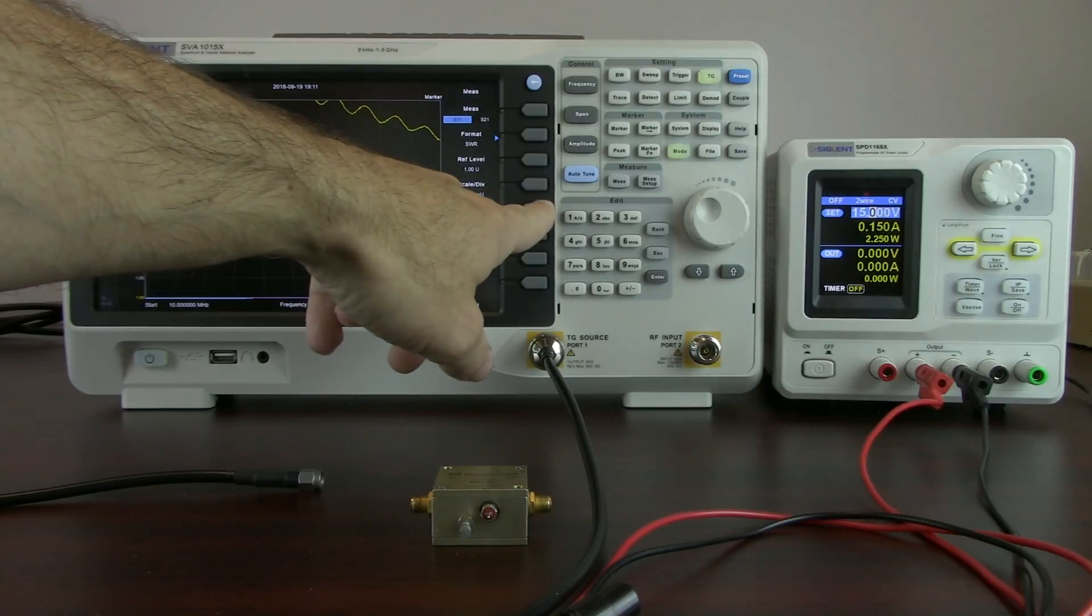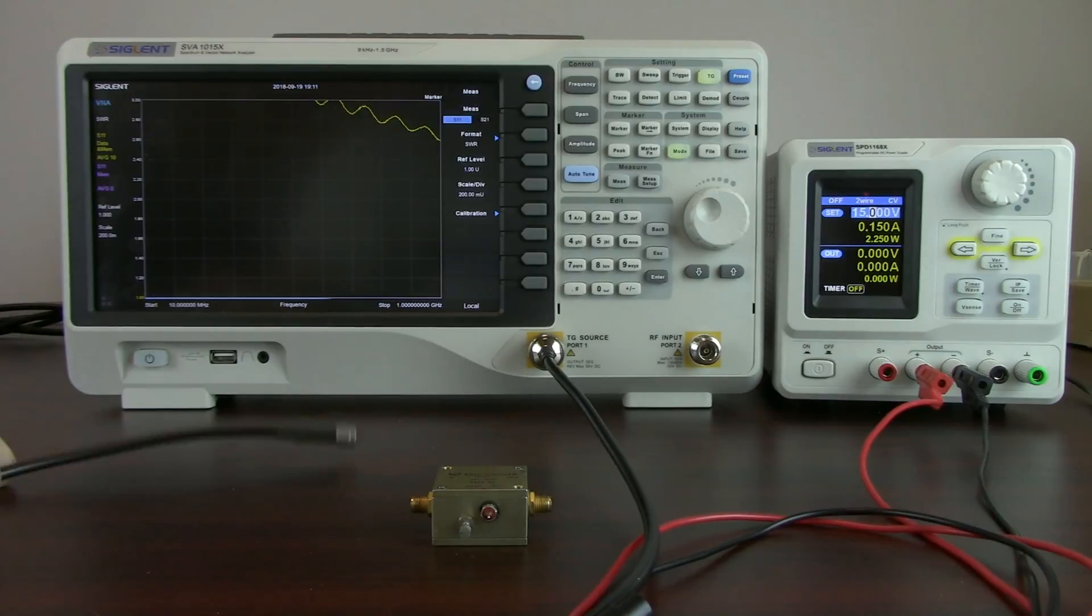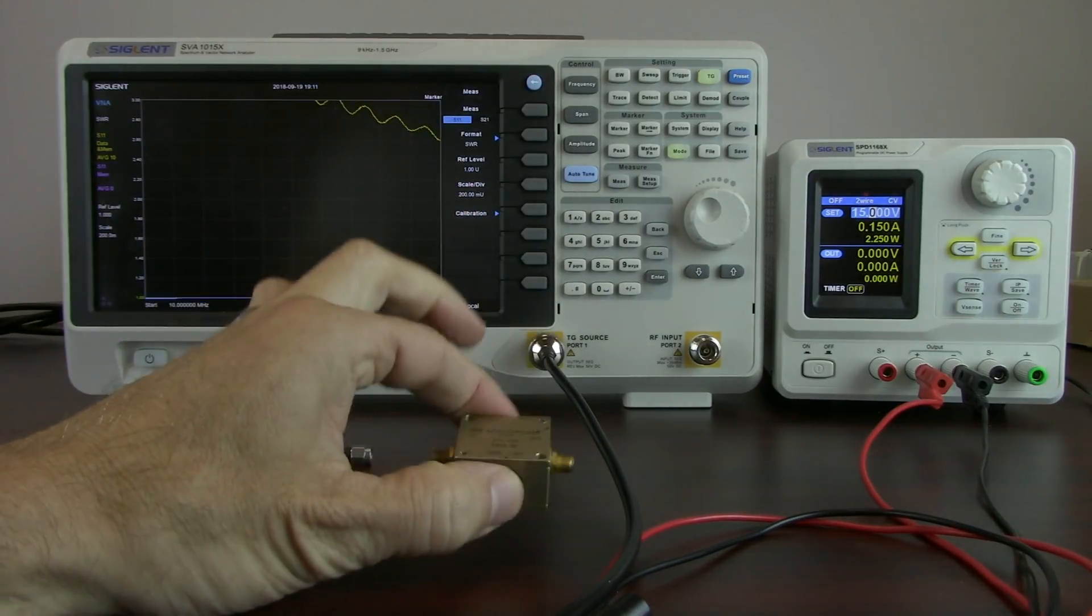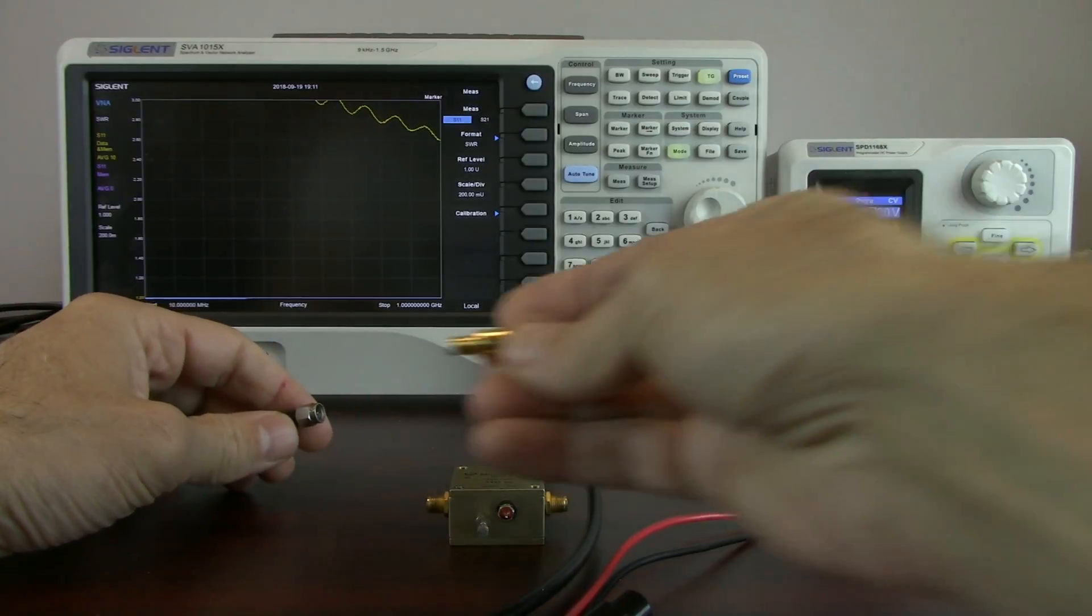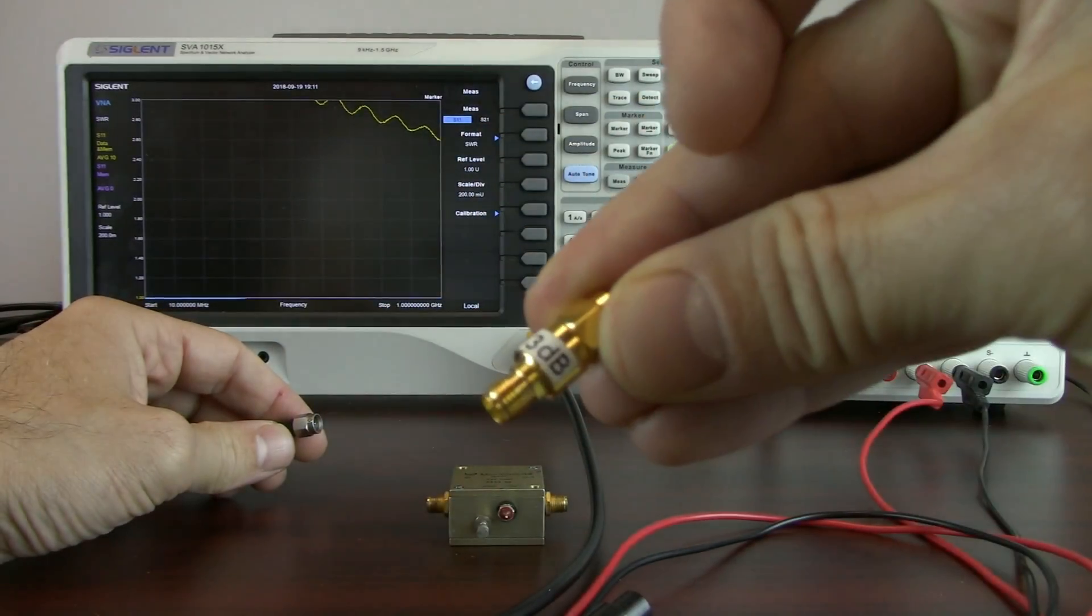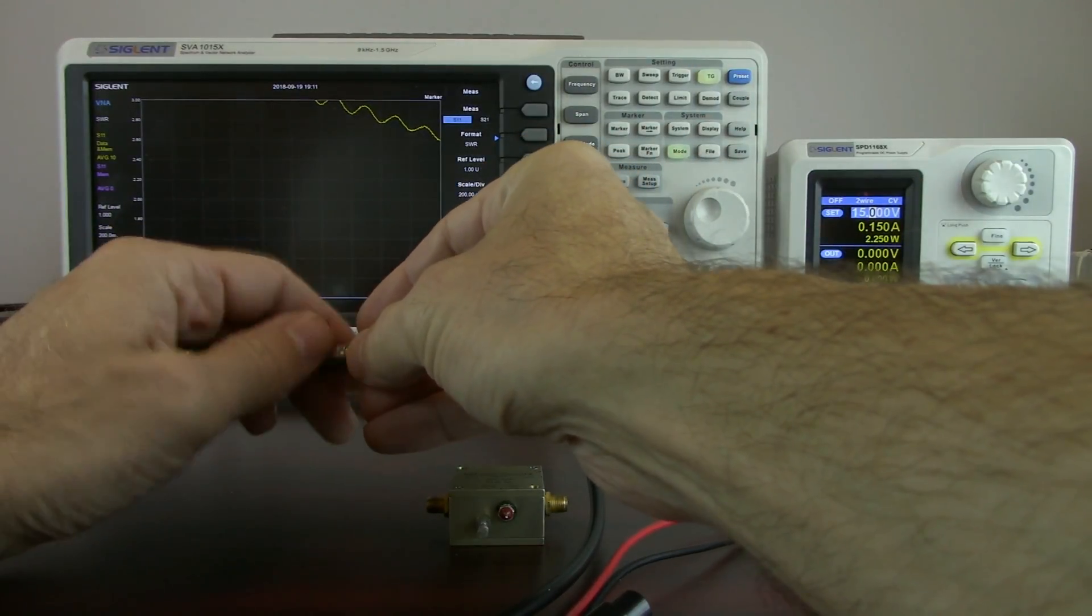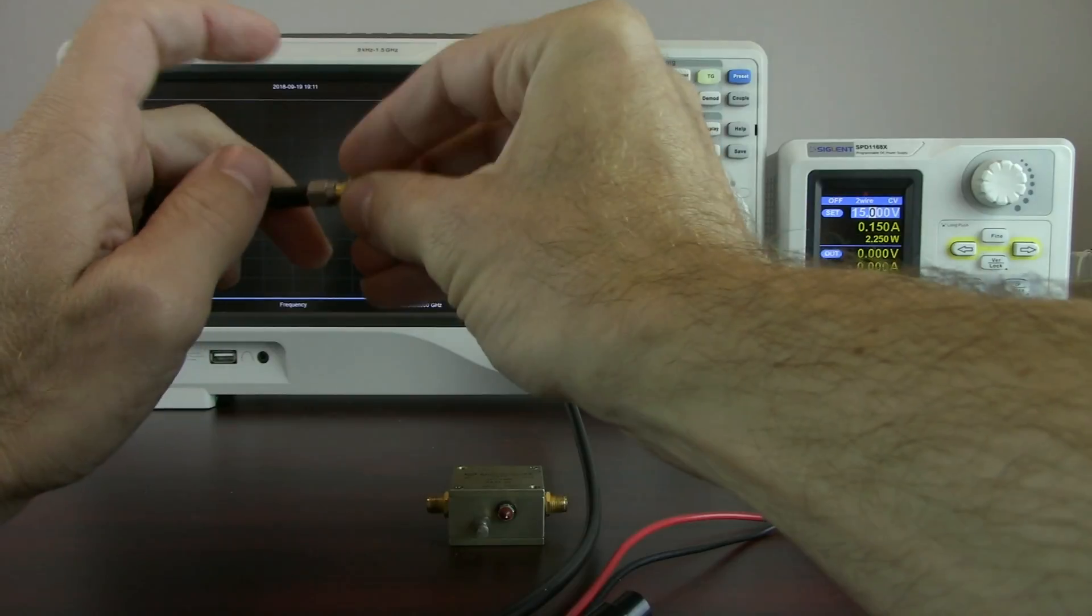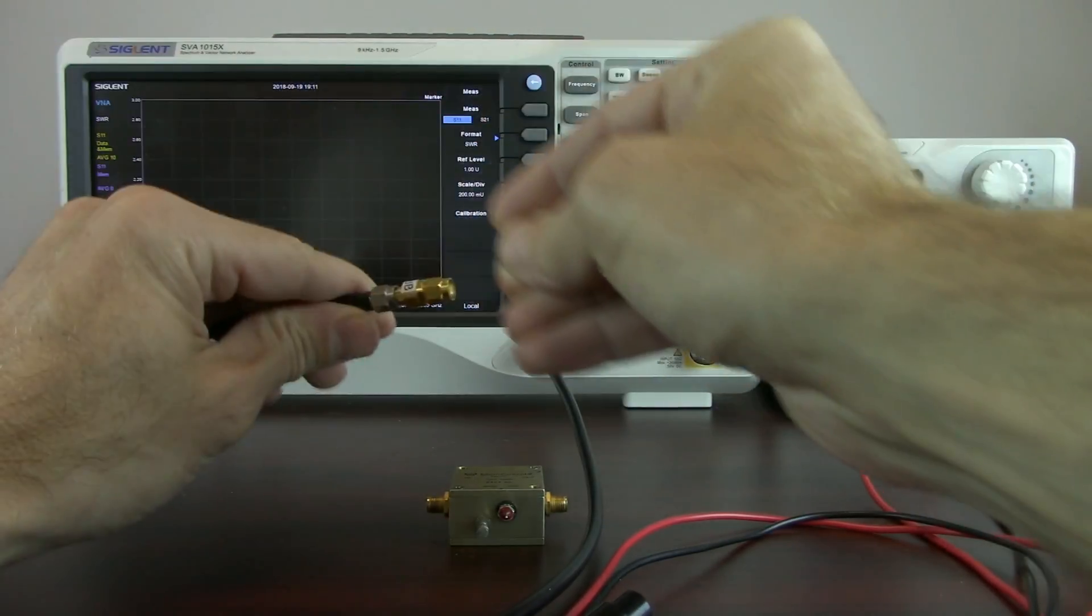And now I'm going to perform a calibration. This is going to remove the effects of the cabling so we're only going to measure the device under test. Since this is an amplifier and amplifiers and active devices can be sensitive to impedance differences, we're actually going to insert a 3dB attenuator shown here into the cabling or into the circuit. And notice that I'm holding the barrel and I'm rotating the hex. That's going to help that SMA connector last longer.